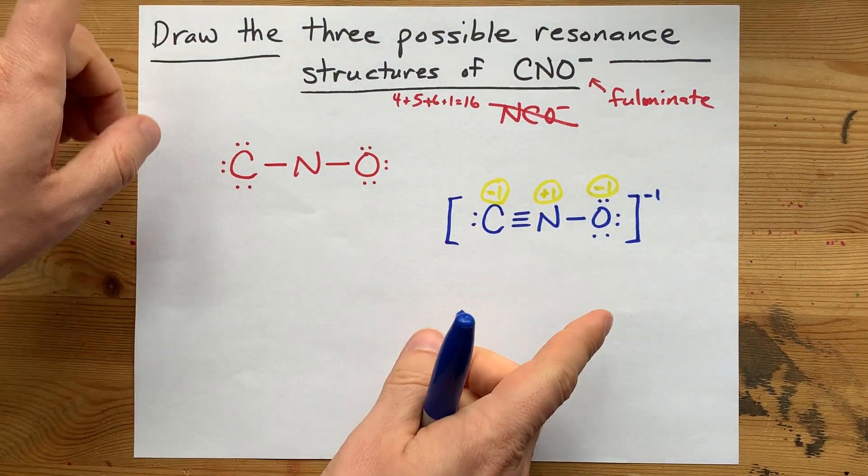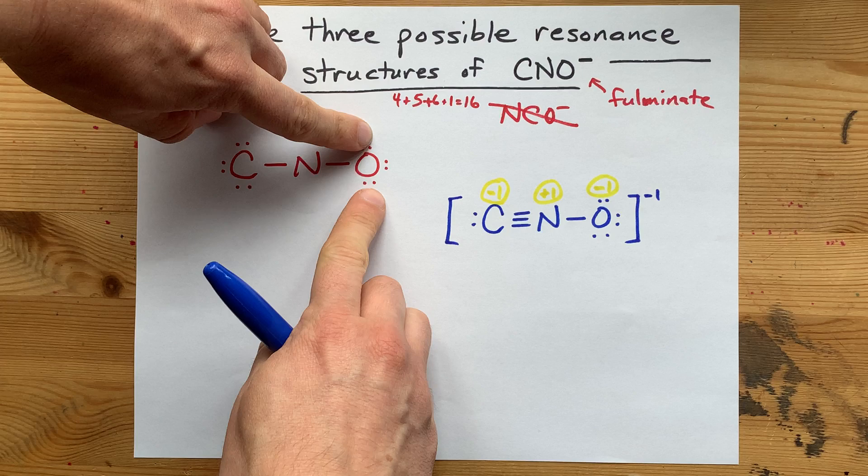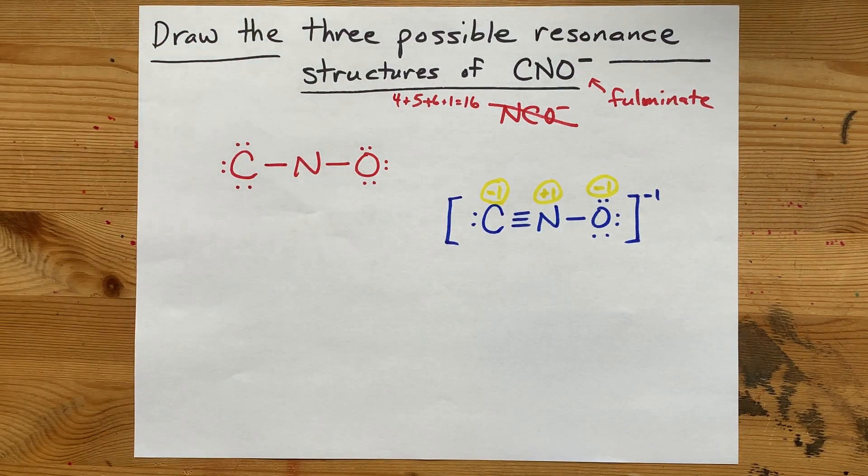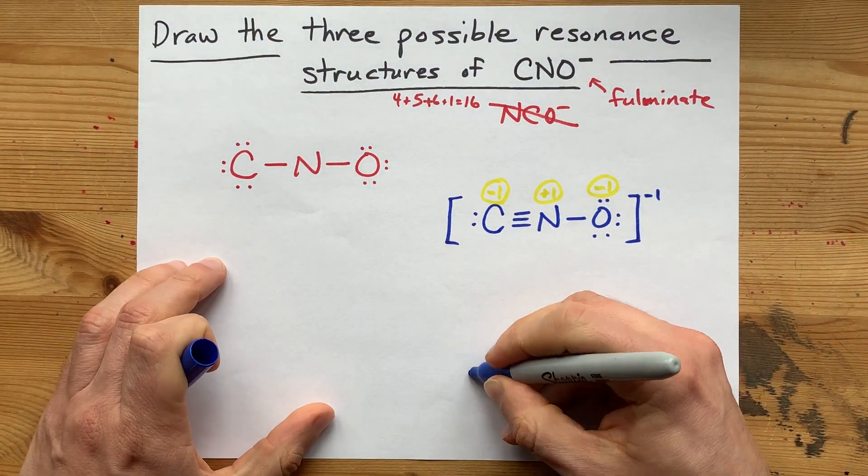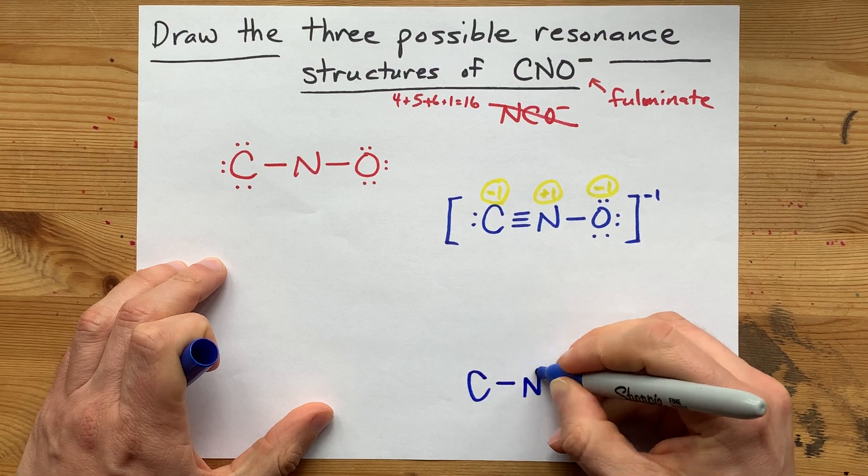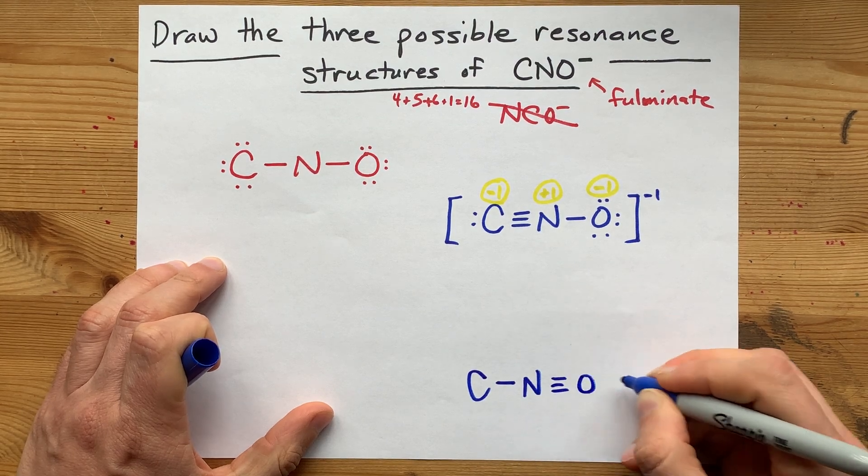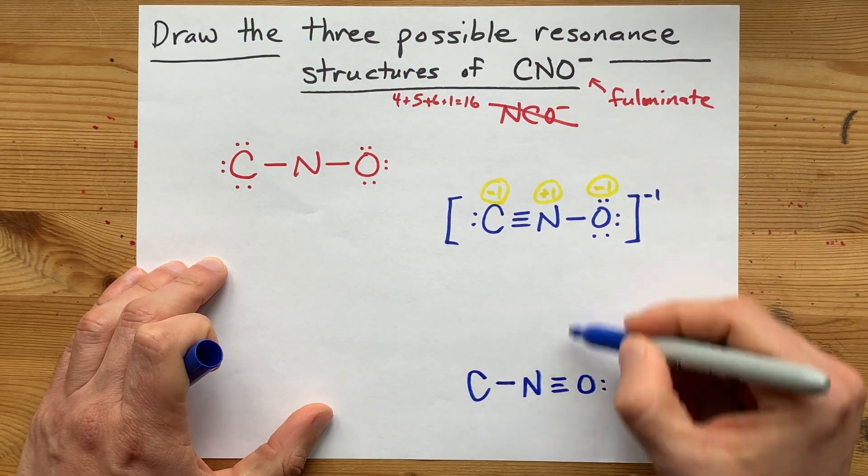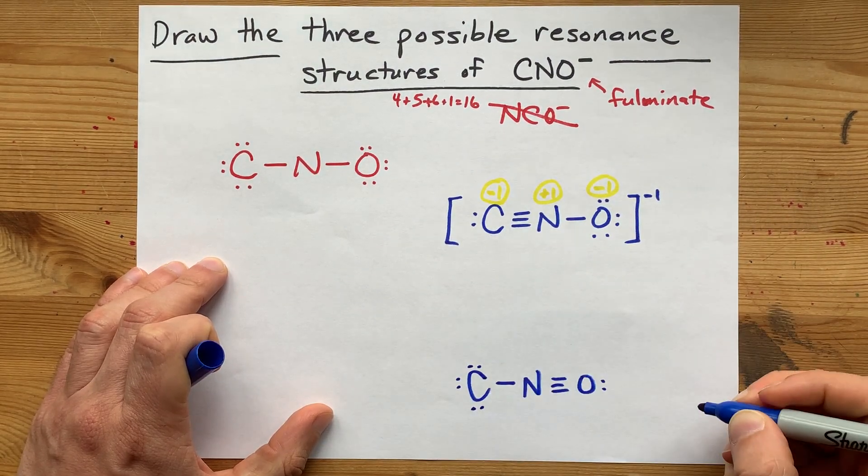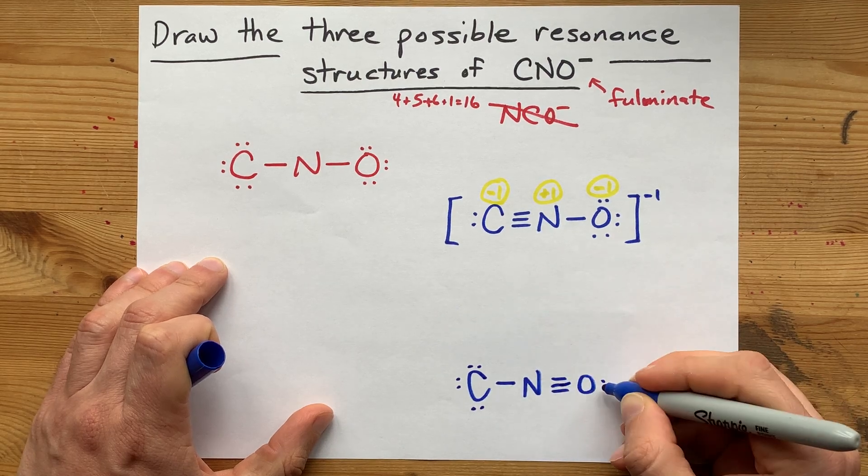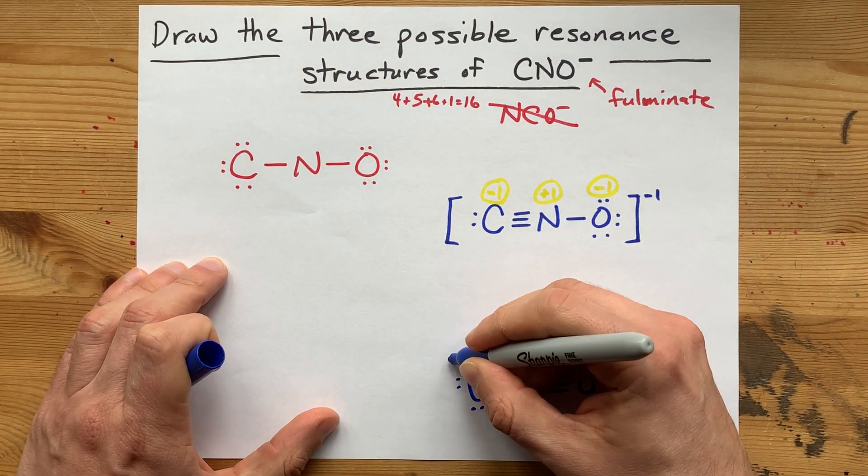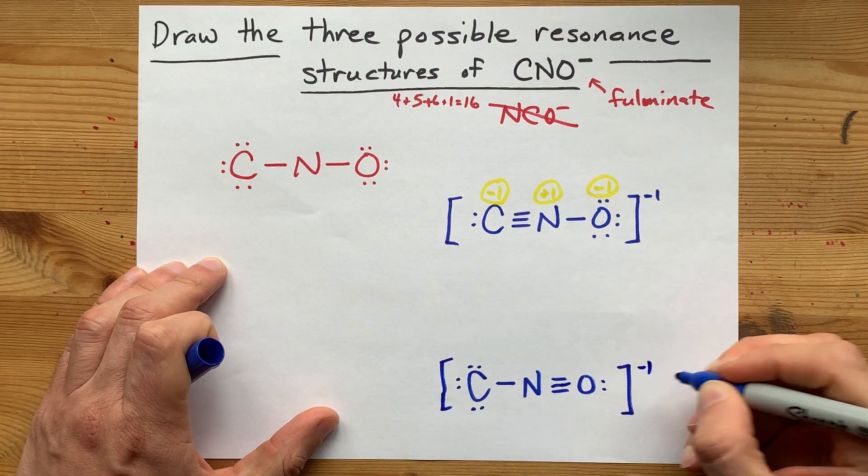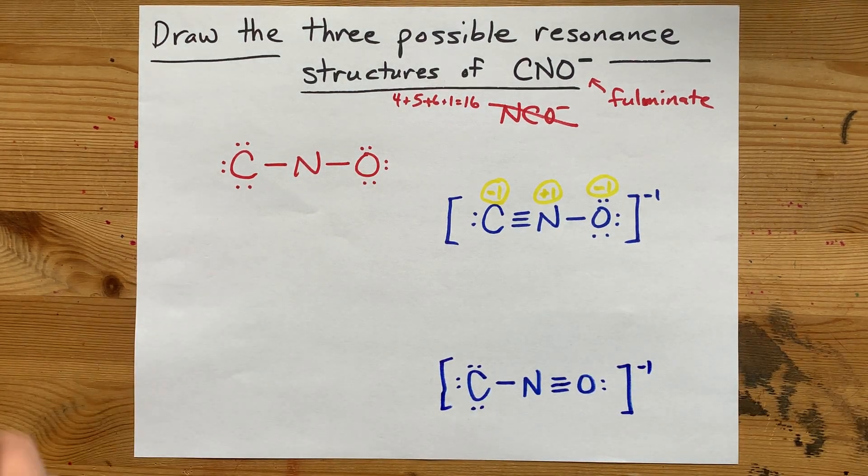What if we took both of the lone pairs from oxygen instead of carbon? Well, then we'd be left with carbon single bonded to nitrogen, which itself is triple bonded to the oxygen. This actually looks like almost the exact reverse of this. It's the carbon that keeps all its lone pairs, and it's the oxygen that's relegated to a single lone pair. Don't forget your square brackets with the minus one charge.